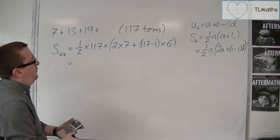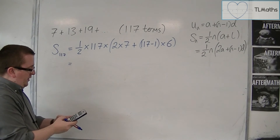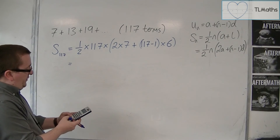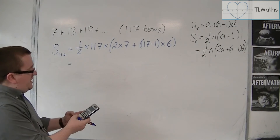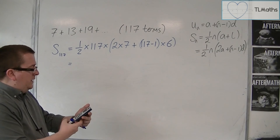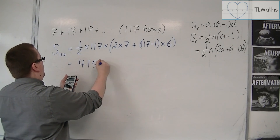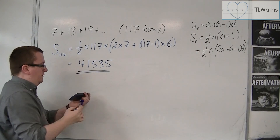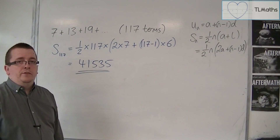So I pop this all into the calculator: one half times 117 times 2 lots of 7, plus 116 times 6, and that gets me 41,535. And that's how we can use the second of the two formulas.